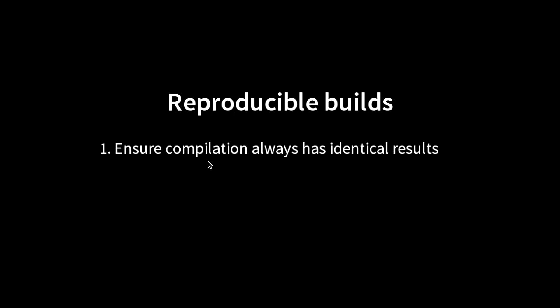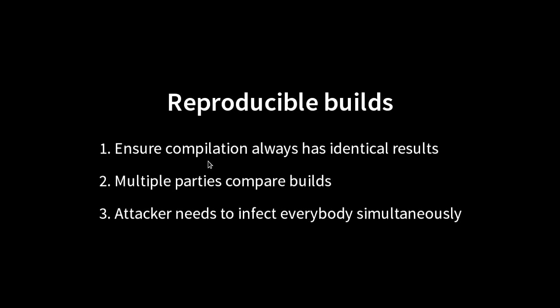Individual developers could also be blackmailed. Reproducible builds prevents developers from becoming targets for attacks in that area. The way this works is that we ensure compilation always produces identical results — and by identical, we mean bit-for-bit identical. Multiple parties compare their own builds: I would build it, you would build it, someone else would build it, and we all come together to form a consensus about what the SHA-1 checksum of that should be. Therefore, an attacker would have to infect everyone simultaneously. Otherwise, if I was infected, my build checksum would be different and we'd investigate why.